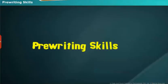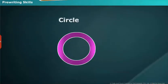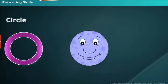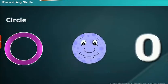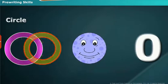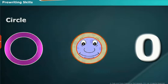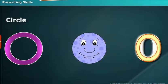Pre-writing skills: 0. Let us now know how to write a 0. It is very simple. Just draw a circle.